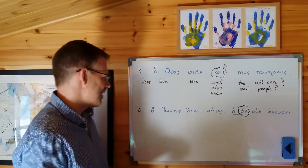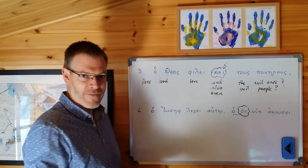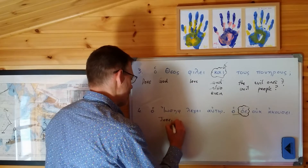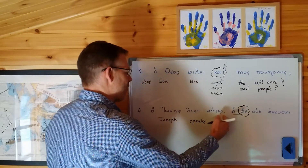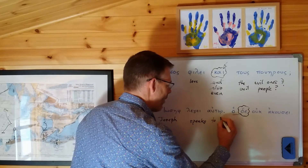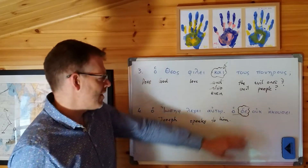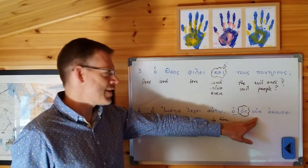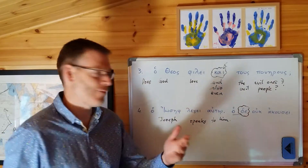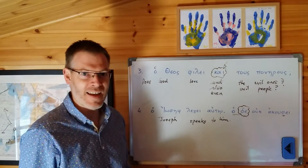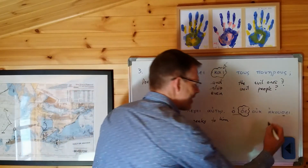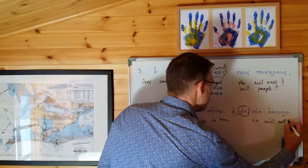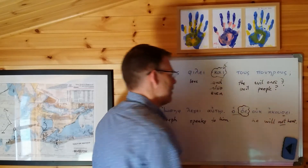Then let's ignore ho de just for a second and translate the rest. Ouk negates a verb, and here's the verb it negates: akousei. That's akuo in the future tense - notice the sigma suffix. Akuso, akuseis, akusei - third person singular. So 'he will not hear' because of the ouk.